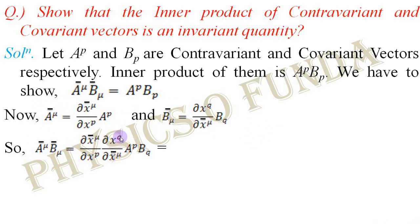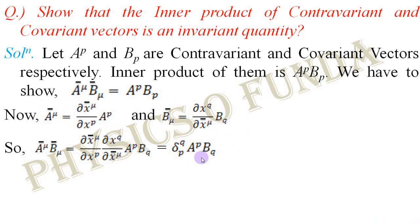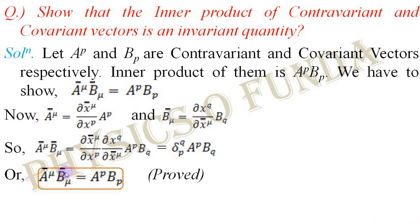Now, what does this section stand for? The term (∂x̄^μ / ∂x^p)(∂x^q / ∂x̄^μ) is nothing but the Kronecker delta δ^q_p, and A^p B_q is multiplied with that Kronecker delta. If q equals p, the Kronecker delta gives 1; for all other values of q, it becomes 0. So finally we get Ā^μ B̄_μ = A^p B_p, where q = p and the Kronecker delta equals 1. In all other cases it is 0, so the required equation is proved.